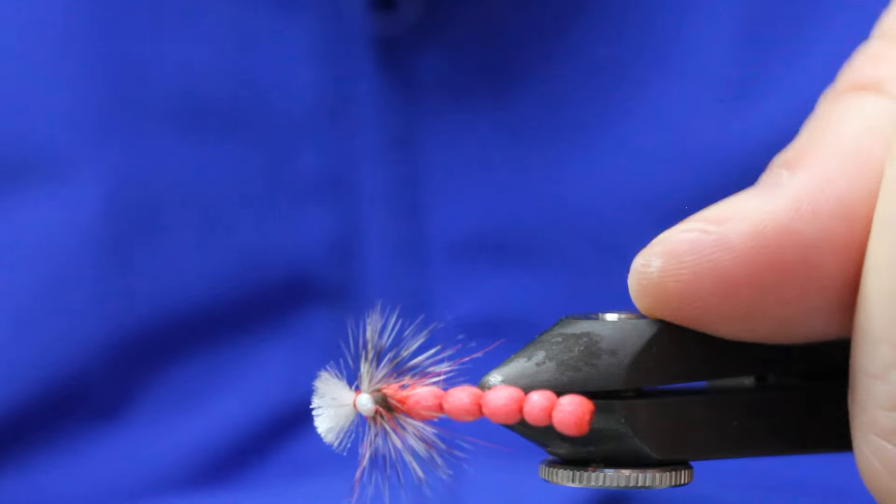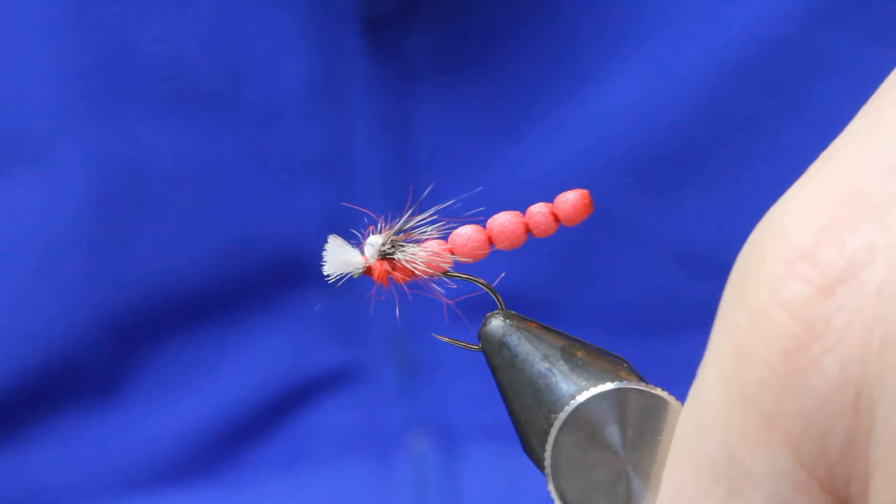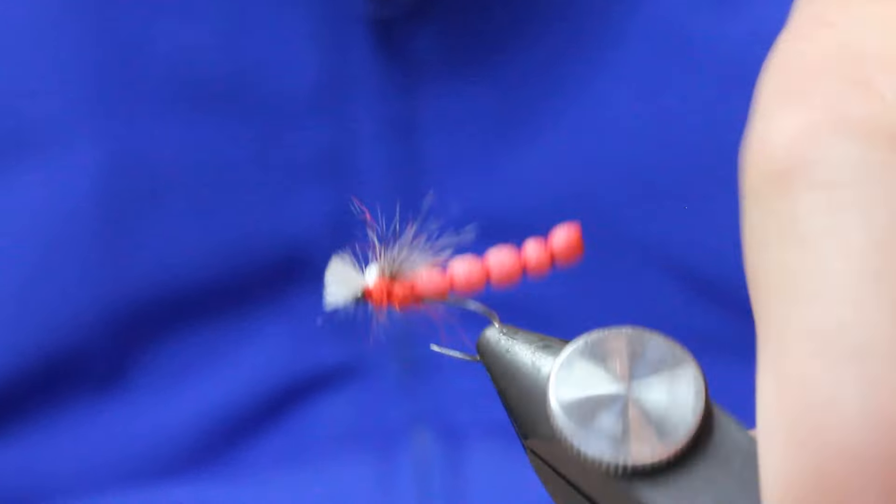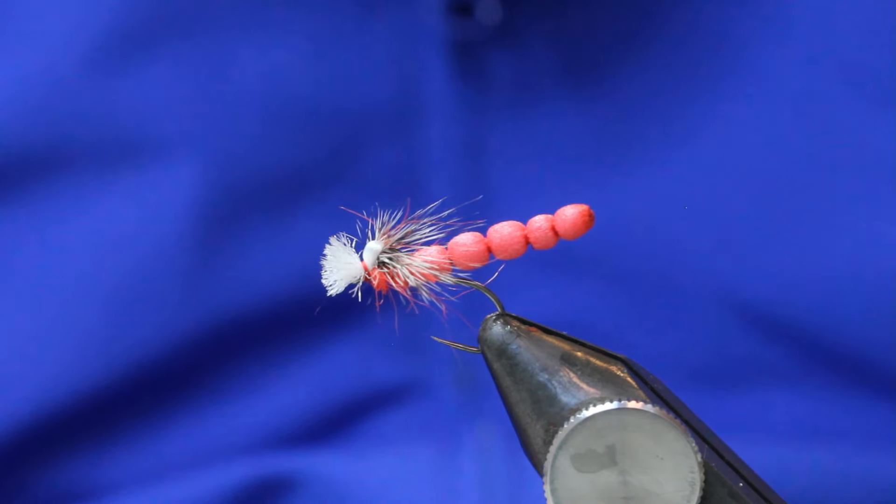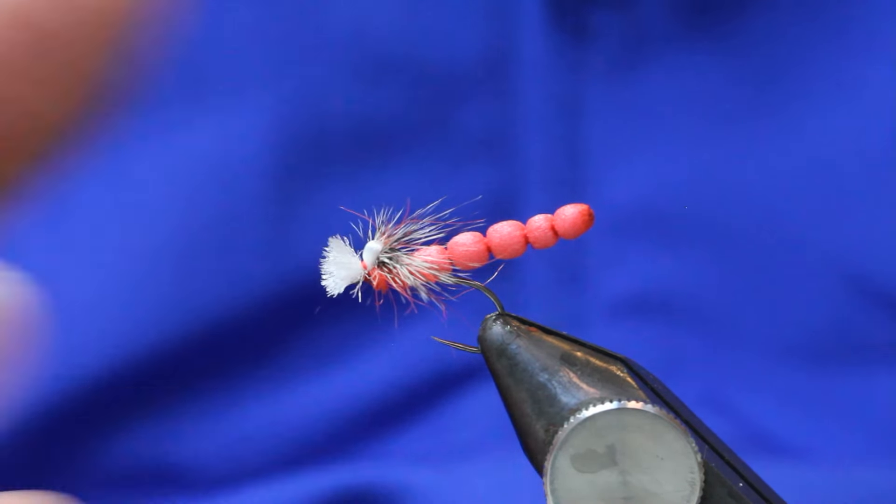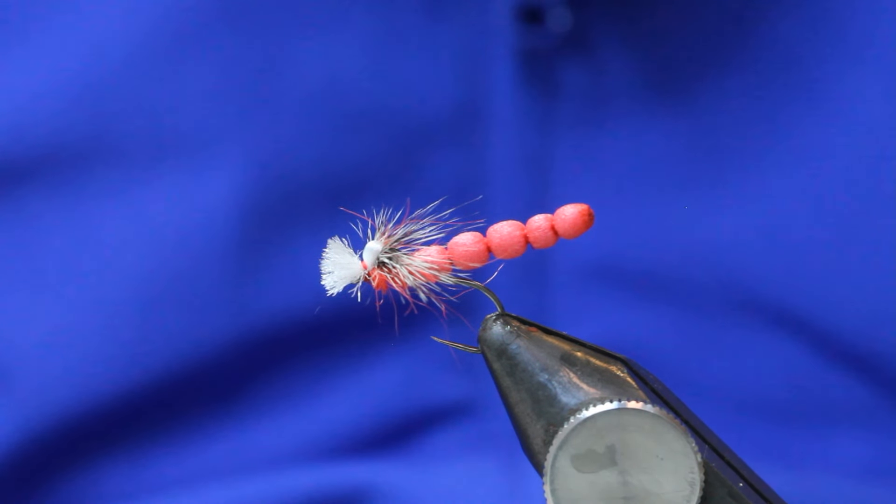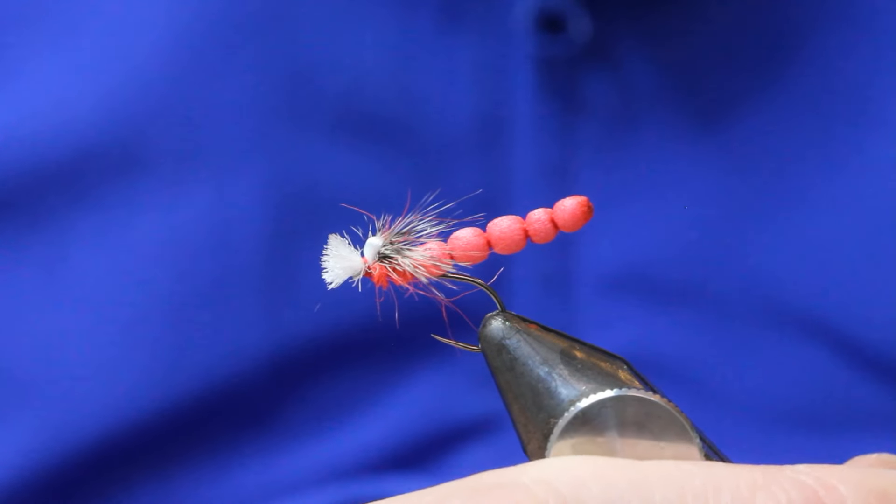And there he is, that's your detached body big red. Works an absolute storm on the reservoirs. You can actually fish a buzzer underneath it, it's that buoyant. There you go folks, really hope you enjoyed that. If you did please be kind enough to subscribe to the channel, plenty more fly fishing and fly tying videos in there. Take care and bye bye.